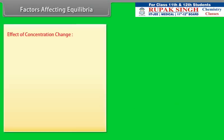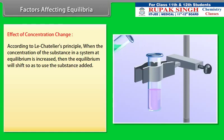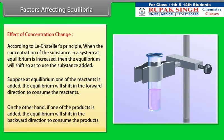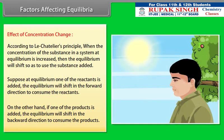Effect of Concentration Change: According to Le Chatelier's principle, when the concentration of a substance in a system at equilibrium is increased, the equilibrium will shift so as to consume the substance added. If one of the reactants is added, the equilibrium shifts in the forward direction to consume the reactants. If one of the products is added, the equilibrium shifts in the backward direction to consume the products. For example, on a humid day we sweat more because the surrounding air has a large amount of water vapor and our body cannot lose water as water vapor.